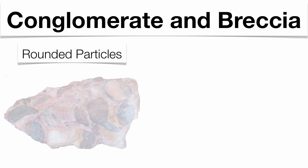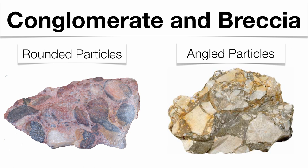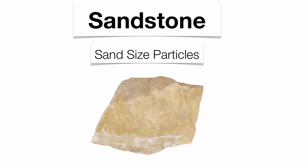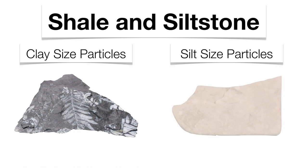Conglomerate is made up of rounded fragments, while breccia is made up of angled fragments. The big difference is that rounded fragments have been carried a further distance — when particles are carried a far distance, they tend to get rounded out. Sandstone is made up of sand-sized fragments and has a very gritty feel, almost like sandpaper. Then we move into the two rocks with the smallest fragments: shale is made up of clay, and siltstone can be made up of silt. Those two rocks are very hard to identify because their particles are so microscopic.